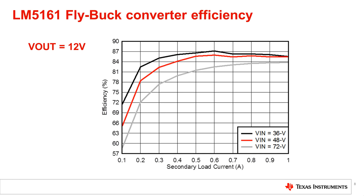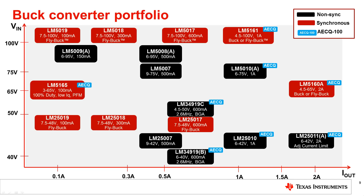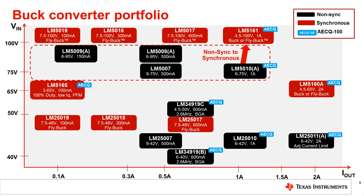In fly-buck mode, which is the isolated output mode, this is a 12 volt isolated output up to 1 amp. You can see the efficiencies at 36 volts, 48 volts, and 72 volts input voltage range. The LM5161 complements the existing high-voltage buck converter portfolio by providing a non-synchronous to synchronous upgrade path, a higher current upgrade path for already synchronous buck converters, and also a higher voltage path from its sister LM5160 product.